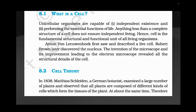Unicellular organisms are capable of independent existence. Unicellular organisms like amoeba, paramecium, chlamydomonas, and Chara of plants — they can independently live and perform the essential functions of life: respiration, reproduction, digestion. Anything less than a complete structure of a cell — cell membrane, nucleus, mitochondria, endoplasmic reticulum, Golgi apparatus — does not ensure independent living.